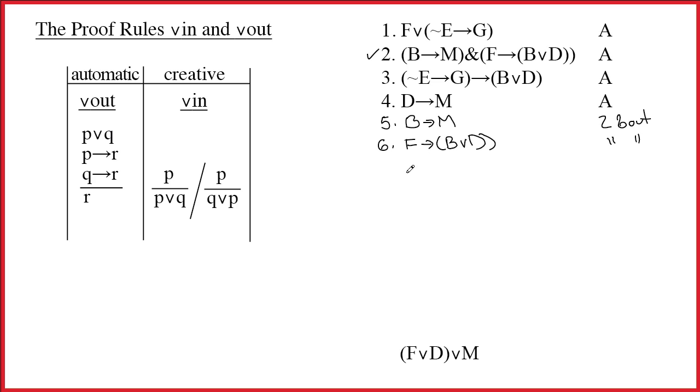Now, let's think about line 1. It has a wedge as its main connective, so obviously it is an instance of p wedge q. F by itself is p, and then the q part is all that stuff in parentheses. That's obvious. Well, if I see a p wedge q, the rule tells me I have to go look for p arrow r and q arrow r. Do I have a conditional someplace that starts with f? Well, in fact, I do. So here's a potential p arrow r.